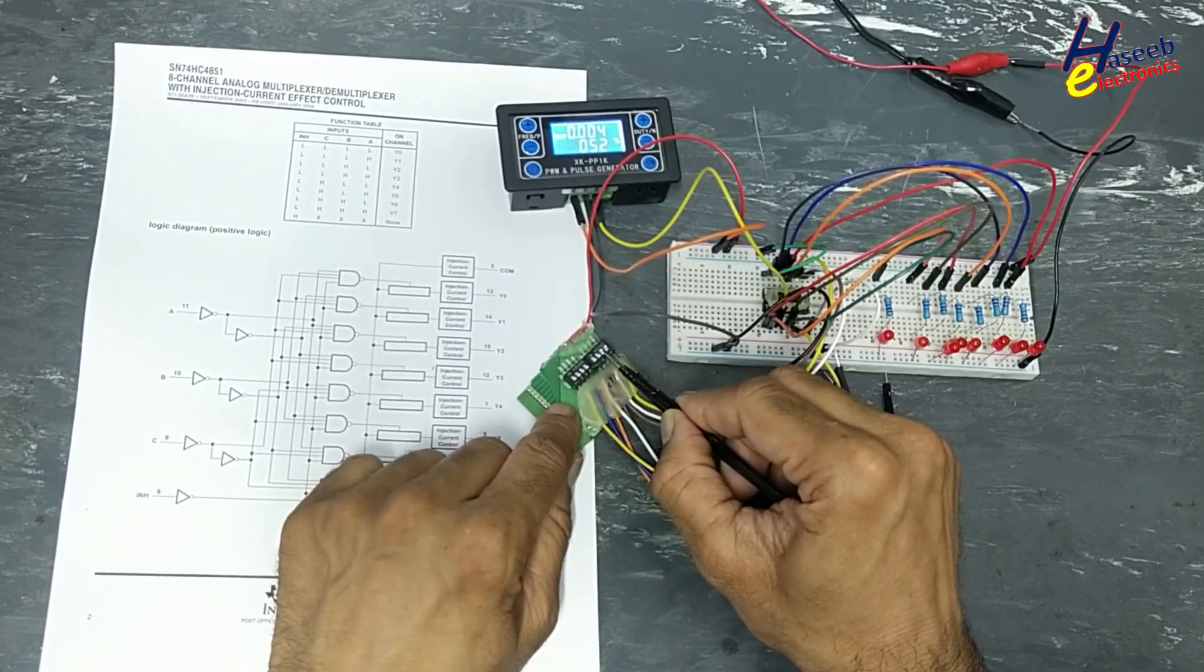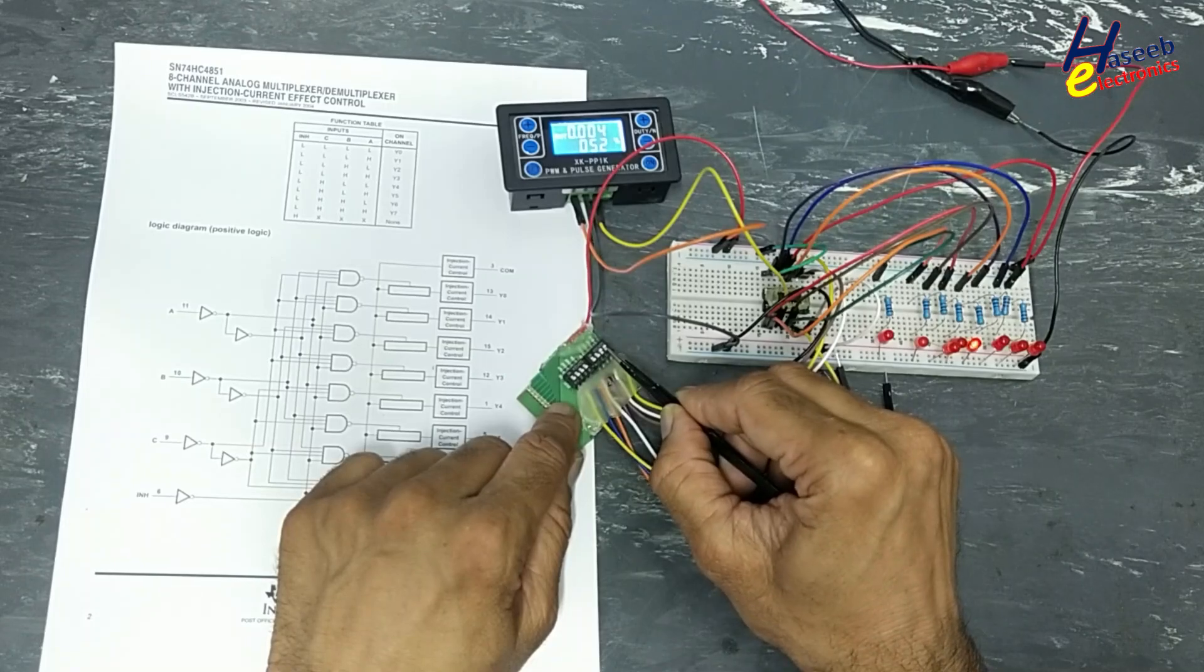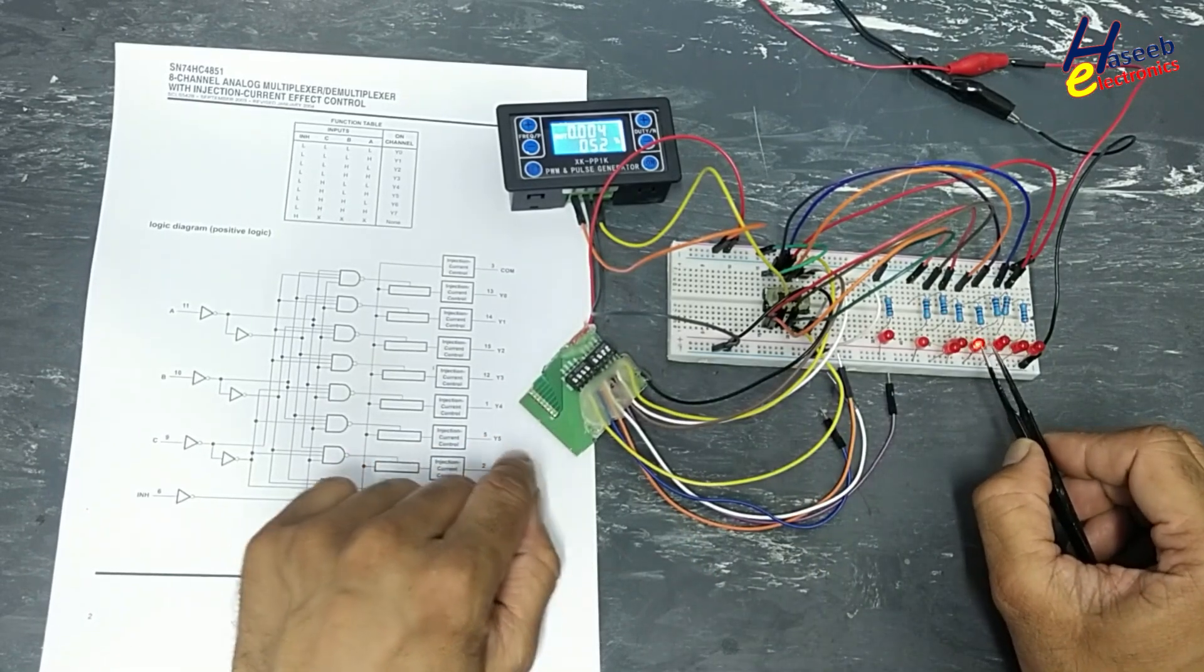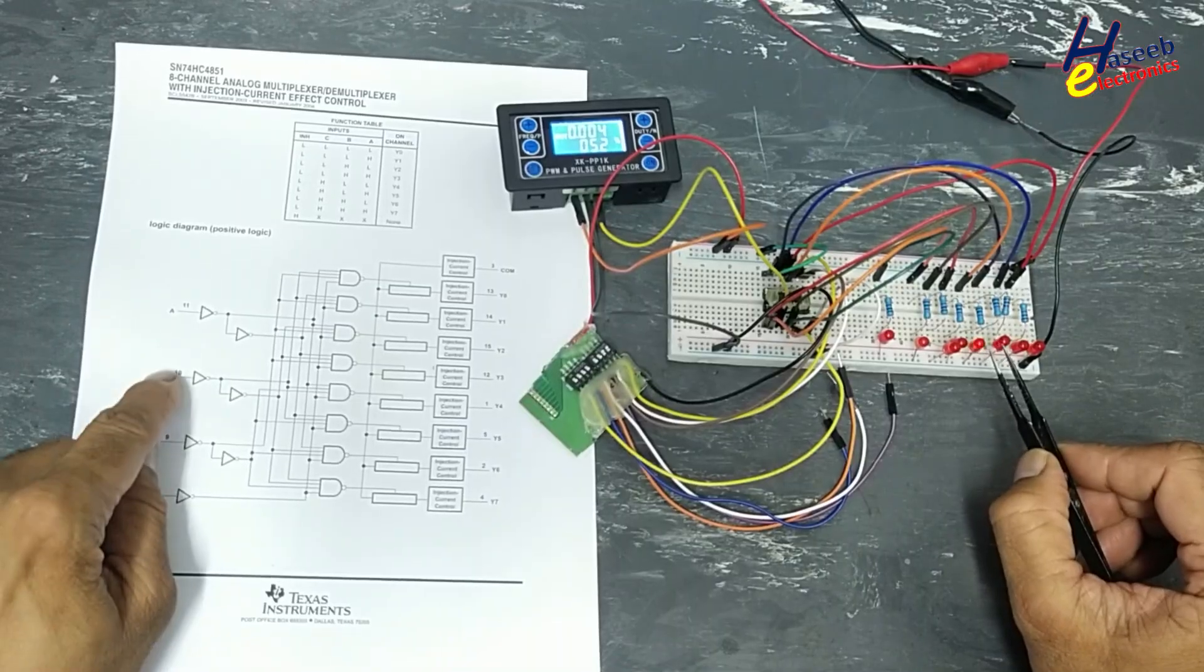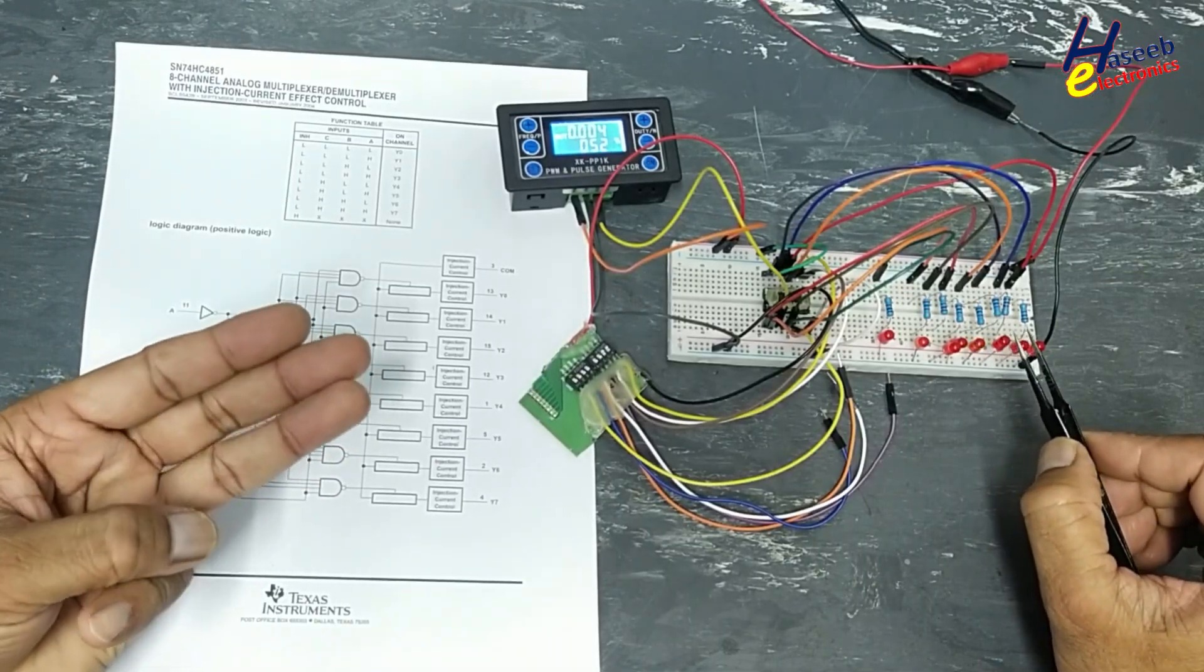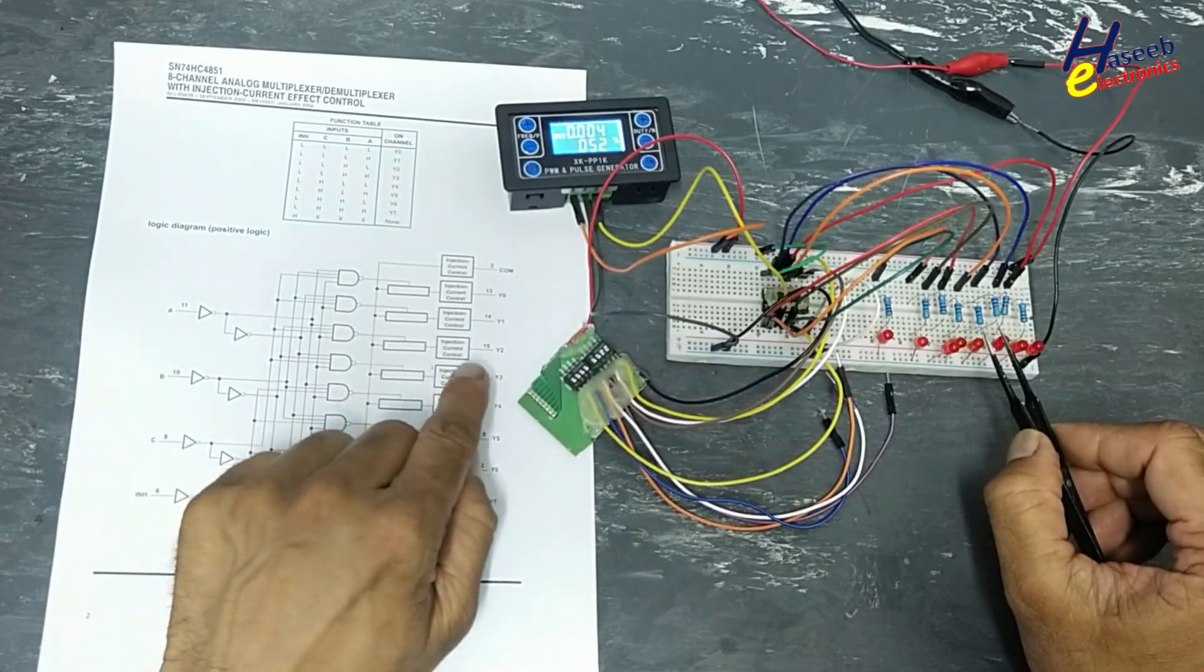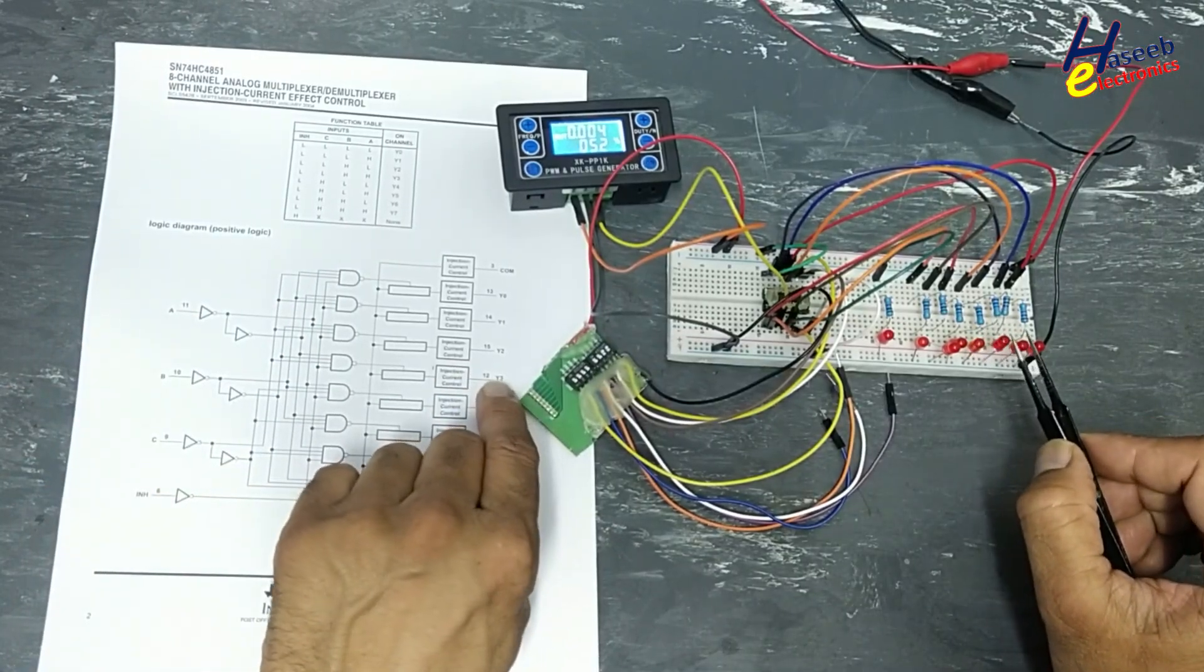C zero, B one, A one. Y zero, Y one, Y two, Y three. So zero one one, that is binary of three. So this line is activated now.